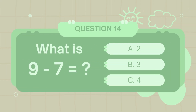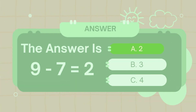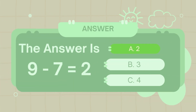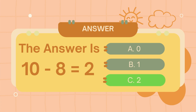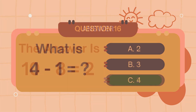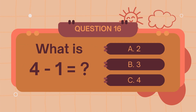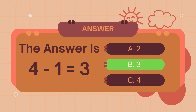What is 9 minus 7? The answer is 8. What is 9 minus 8? The answer is 8.